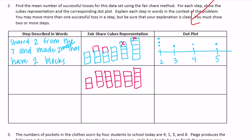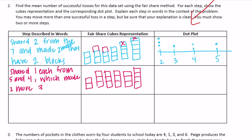I shared one each from the five and from the four, which made two more three-blocks. For the dot plot, we have a two, four threes, and a four. So all we need to do is share one more time.